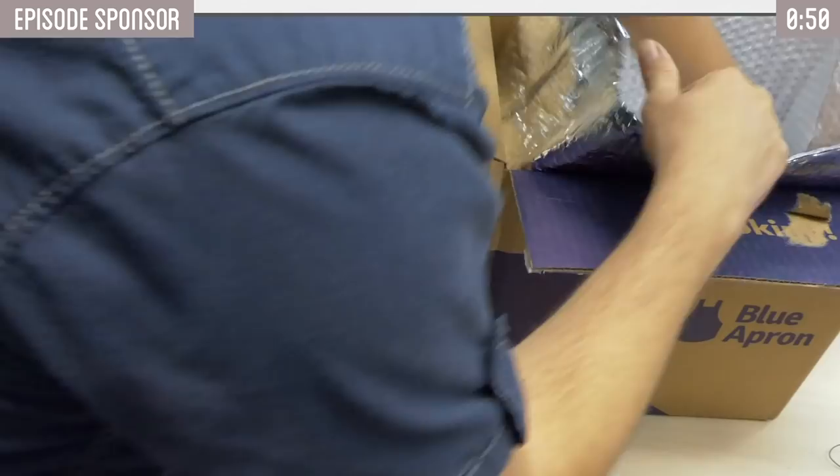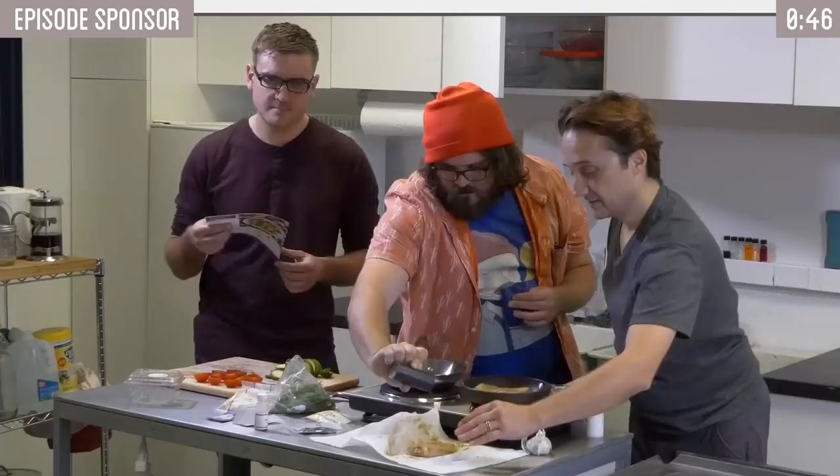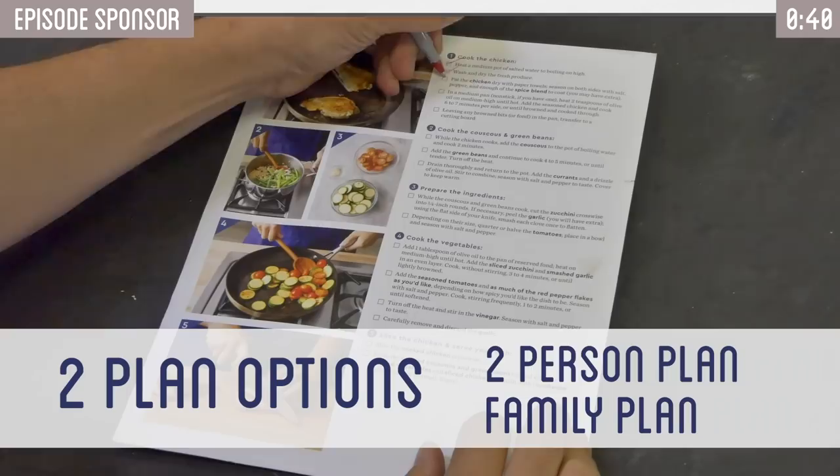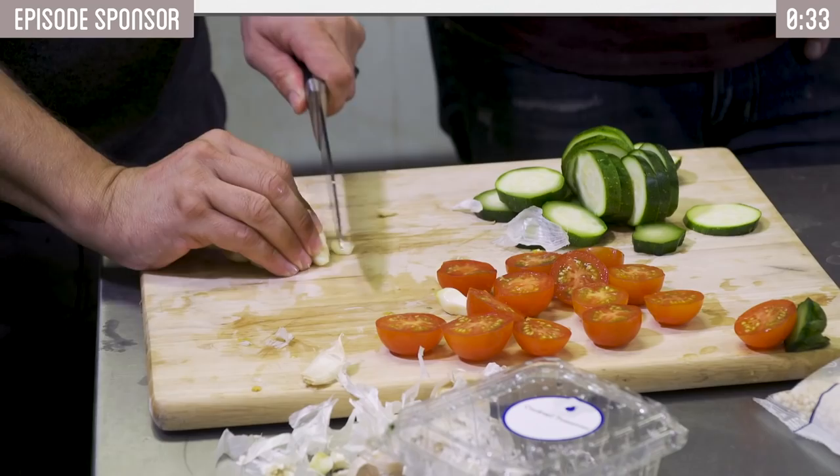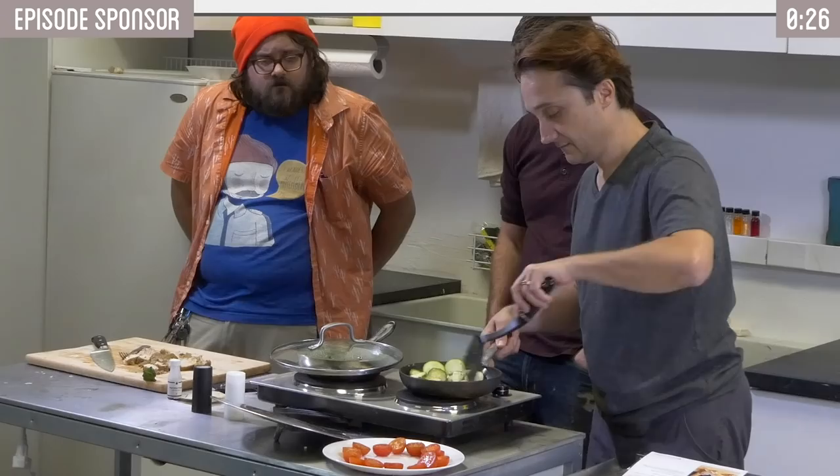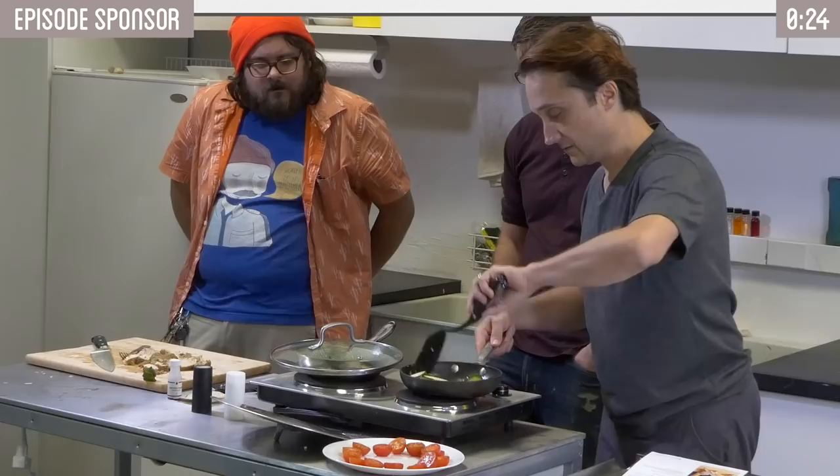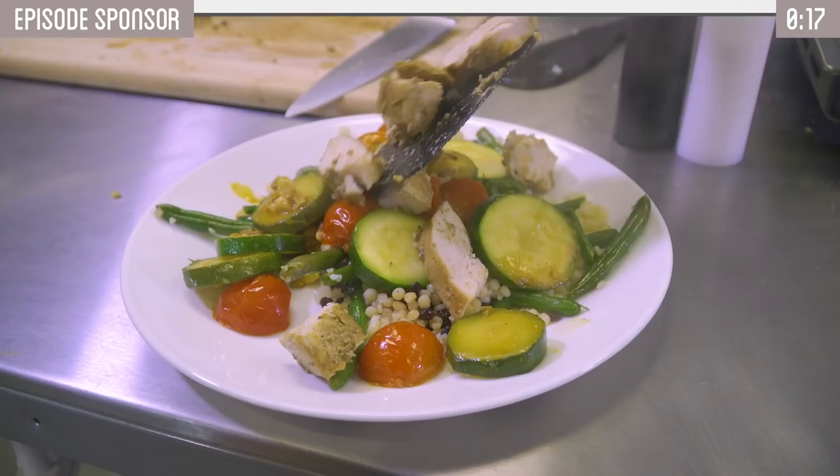Blue Apron allows you to create delicious, chef-designed recipes at home. They offer two types of plans: the two-person plan and the family plan. There are eight recipes each week, and you can choose any combination of recipes you'd like, whether you prefer meat, vegetarian, or a combination of both. They encourage us to try exotic dishes that we normally wouldn't choose on our own. Blue Apron recipes are delivered in a refrigerated box, so ingredients will stay fresh even if you're not at home when your package arrives, and they ship to most of the country. There's no commitment - you can skip or cancel the service at any time, and prices start as low as $7.49 per serving.